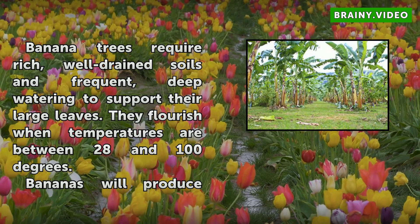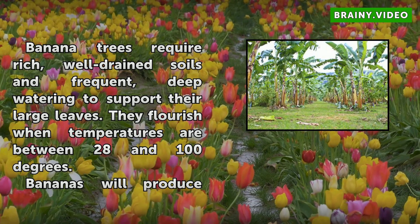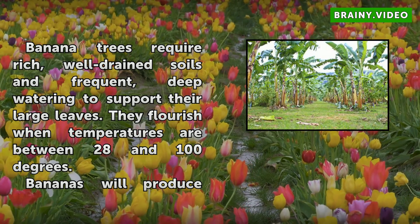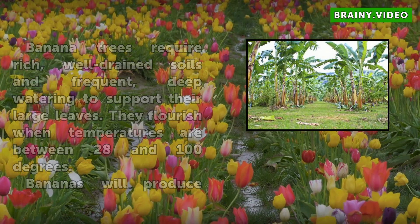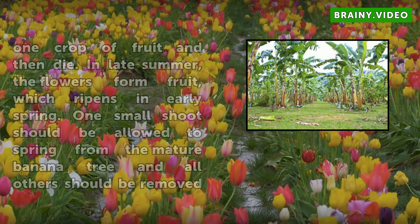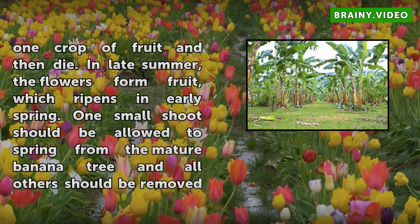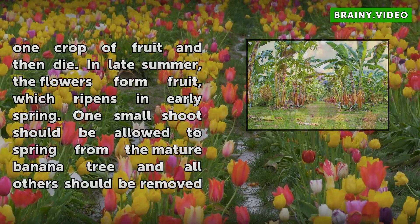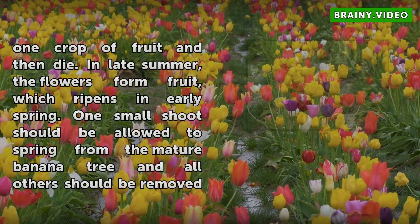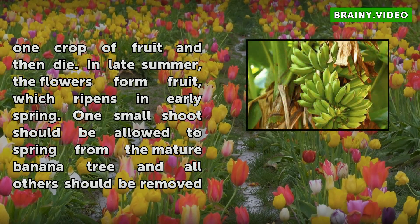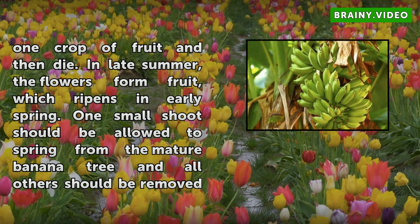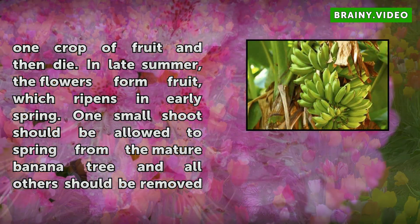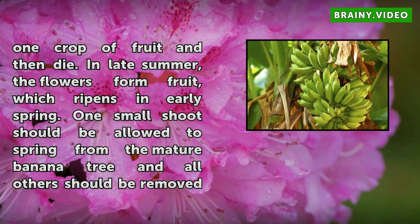Bananas will produce one crop of fruit and then die. In late summer, the flowers form fruit, which ripens in early spring. One small shoot should be allowed to spring from the mature banana tree, and all others should be removed to ensure fruit production in next year's crop.